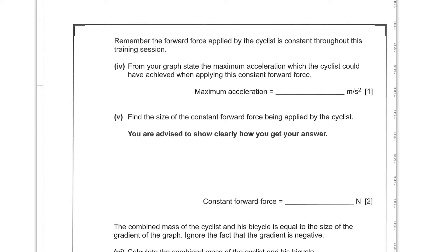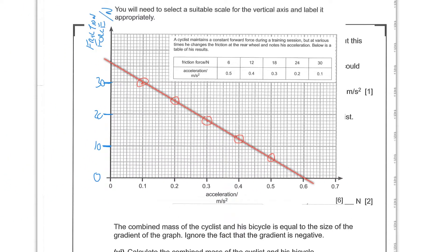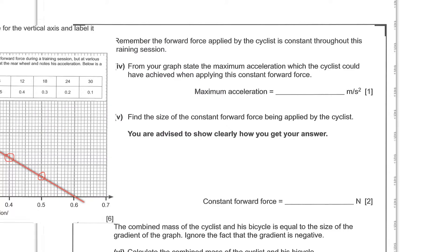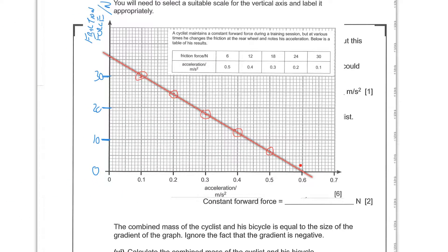Part 4. From your graph state the maximum acceleration which the cyclist could have achieved when applying this constant forward force. So we need to look at that graph. Right. So the maximum acceleration is down here when the force is all the way down to zero. So when we've got no friction that's when we're getting the maximum acceleration. So this value here is the max acceleration. So that is 0.6 meters per second squared. And since that graph is accurate to a tenth we can put a 0 in there as well, because it's not 5.9 and it's not 6.1, it's 6.0.